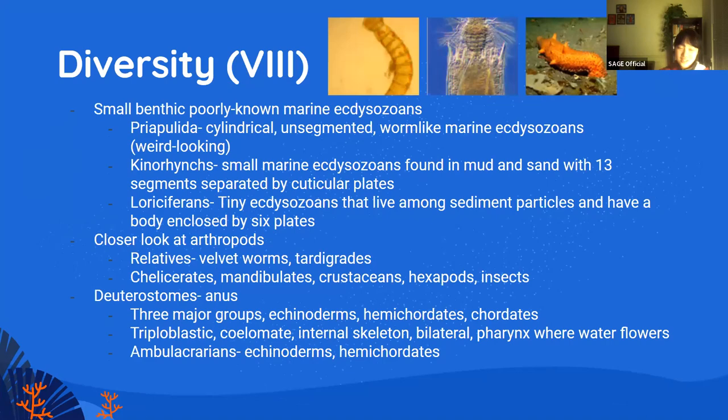Deuterostomes: the anus forms from the blastopore, contrary to protostomes where the blastopore becomes the mouth. There are three major groups: echinoderms, hemichordates, and chordates.